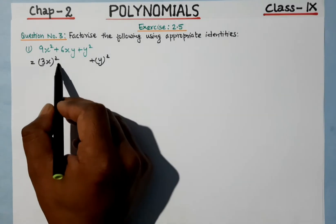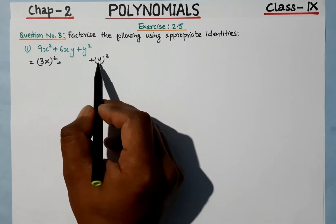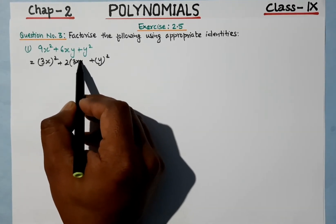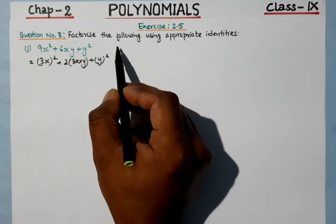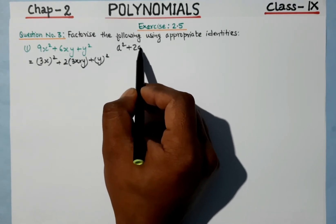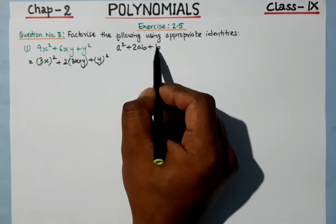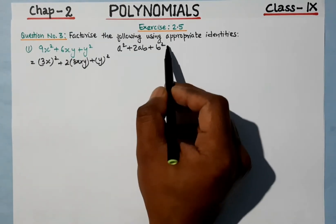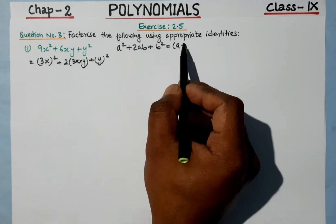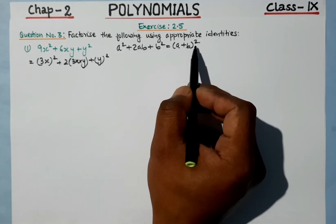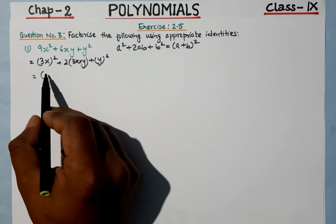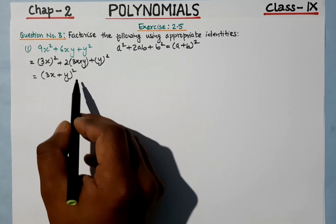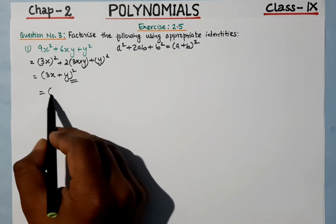That means we have a² plus b² form, and the middle term matches 2a into b, which is 2 times 3x times y. So the identity is a² plus 2ab plus b² — that is (a + b) whole squared. Here our a is 3x and b is y, so the answer is (3x + y) whole squared.